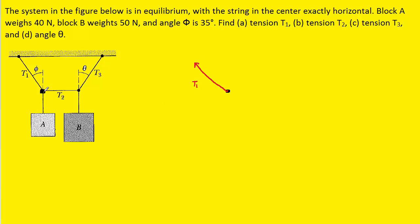We also have T2, which is going to be pulling on this junction to the right, so we can label that force as well. And then finally, we have this downward force that's being exerted by the weight of block A. We'll label a downward force and mark it WA. We'll notice that WA points exactly along the y-axis, and T2 points exactly along the x-axis, but T1 is pointing in both the x and the y directions.